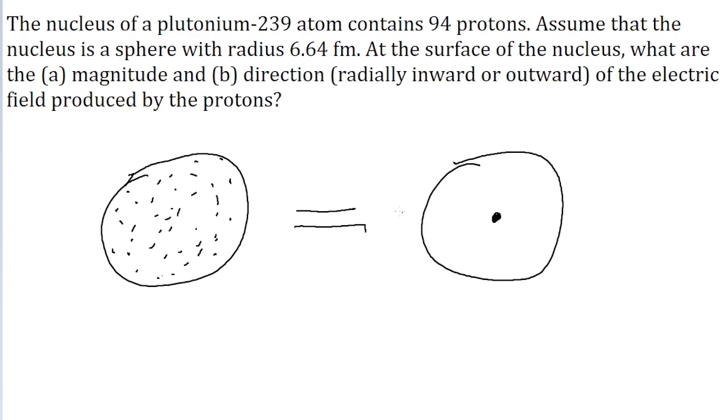So when the problem asks us about a point at the surface of the nucleus, a much simpler way to think about this is that we just have two relevant points, separated by a distance equal to the radius of the nucleus.